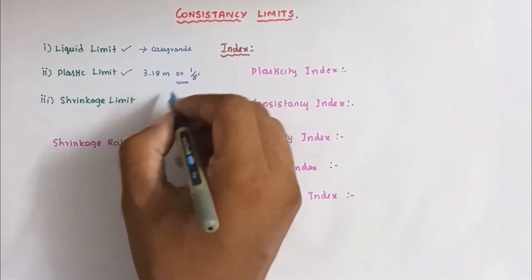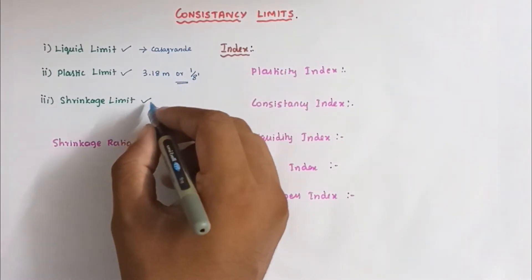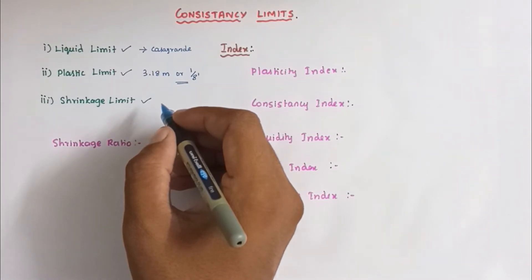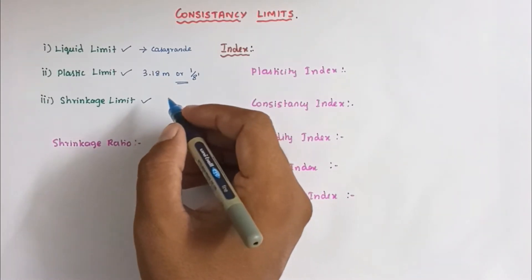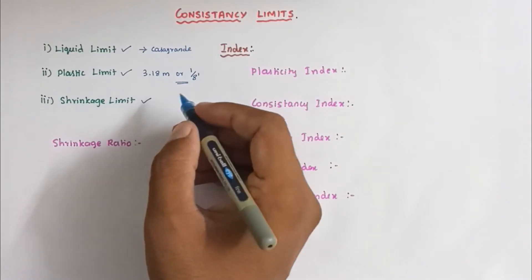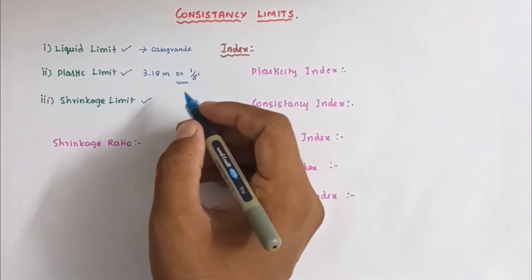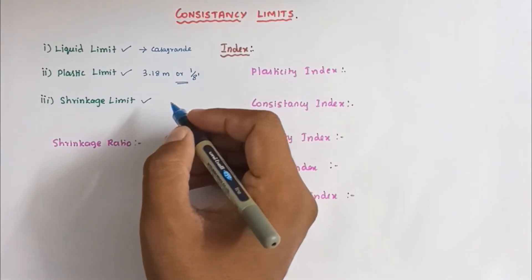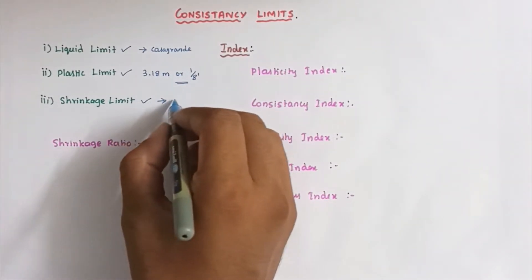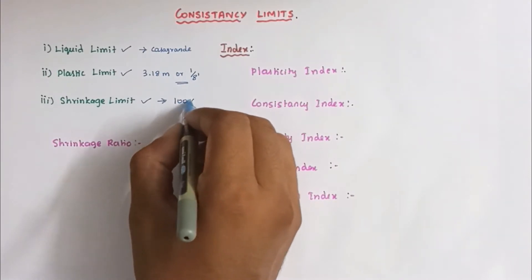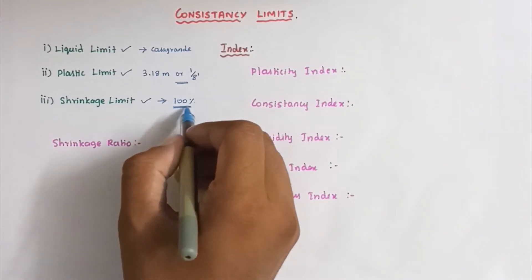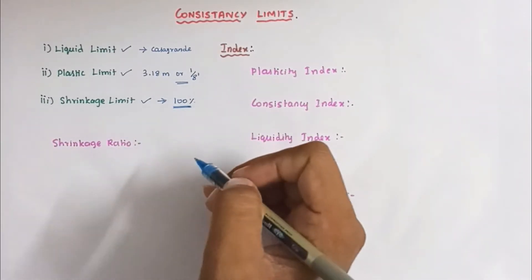Next is shrinkage limit. The maximum water content at which the decrease in water does not cause any reduction in the volume of soil mass is called shrinkage limit. In other words, it is the maximum water content at which the soil is still in saturated condition. The water content of the limit is 100 percent. There is no change in volume after decreasing the water content.